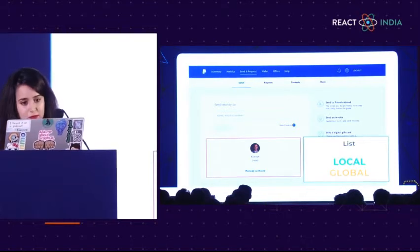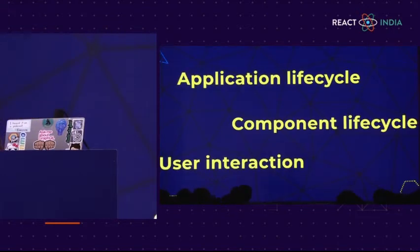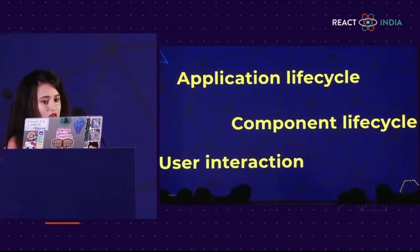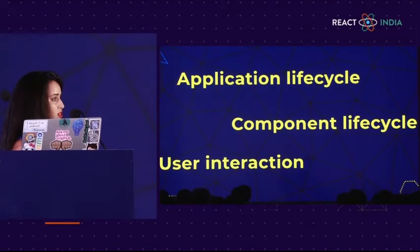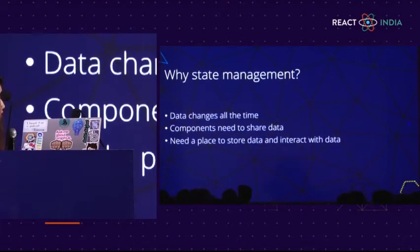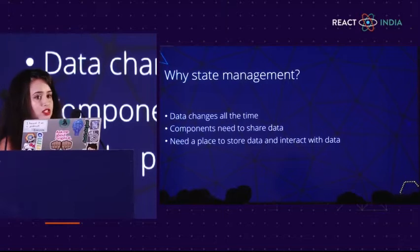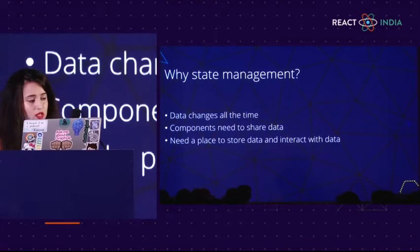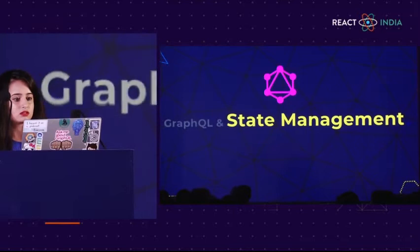State changes in an application in three different ways: the application mounts, the lifecycle of the application changes, or a component mounts and you want to change your state. The component could have called an API, or a user interacts with a form and enters data you want to send over to the application. Why do we need to manage state? The data already exists in the application whether you manage it or not, and data changes all the time. You want your components to know what data has changed, have access to that data, and have a single place to store all of it where all components can talk to.